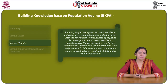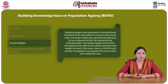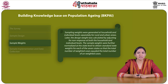Sampling weights were generated at household and individual levels separately for rural and urban areas. The design weight was calculated by adjusting for non-response at both the household and individual levels. The sample weights were further normalized at the state level to obtain standard state weights for each of the seven states, so that the total number of weighted cases equalled the total number of unweighted cases.